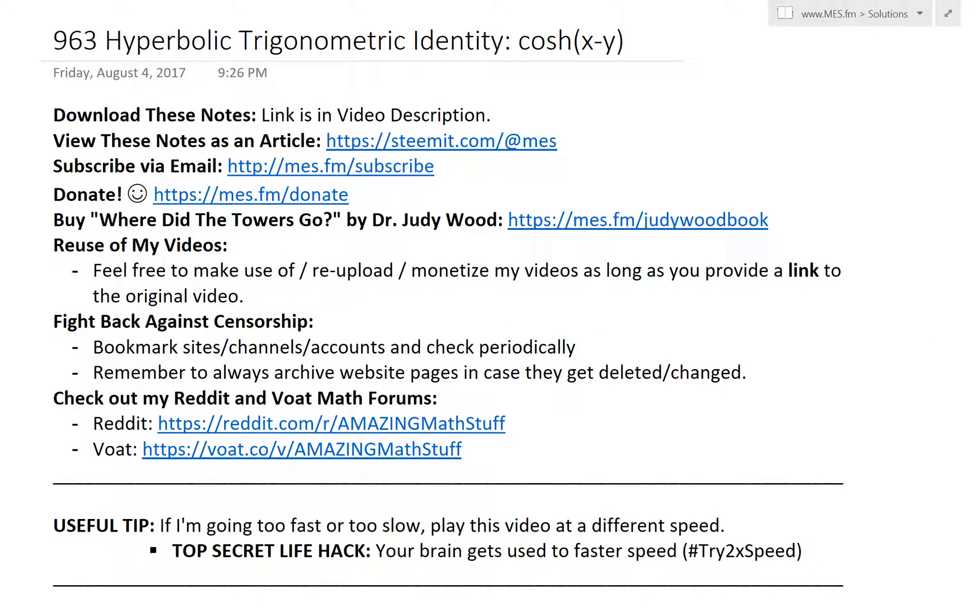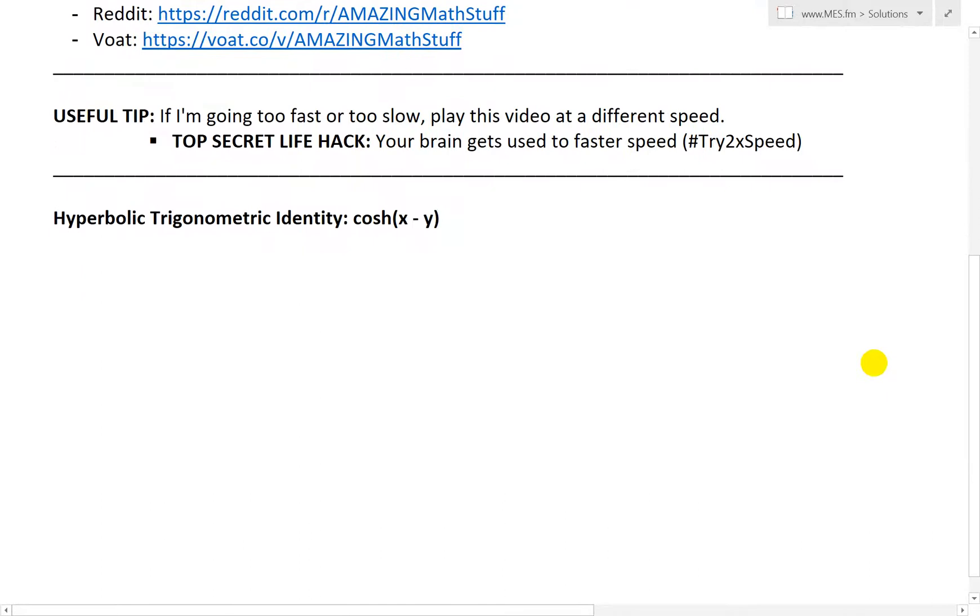Hi, it's time for another math easy solution. Today we're going to discuss hyperbolic trigonometric identities, specifically cosh or hyperbolic cosine of x minus y, and solve that identity.